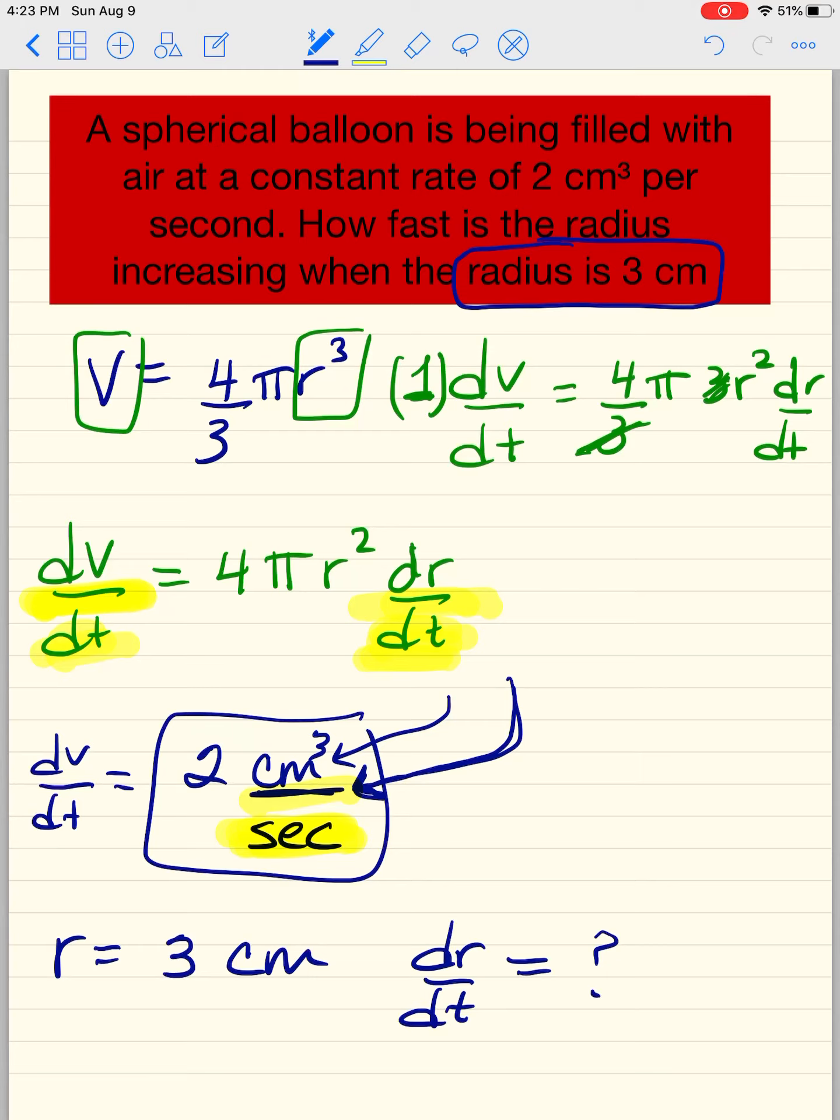Because how fast is the radius, so that's the r, increasing? So it is increasing 5 centimeters per second, 7 centimeters per second, and so on. That's what this is. But it's going to be obviously much smaller.